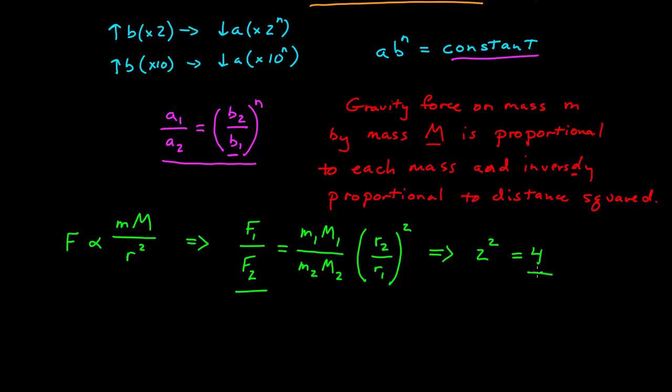And if I solve for f2, then the second force is equal to one-fourth the original. By doubling the distance between two objects, my gravitational force goes down by a factor of four.